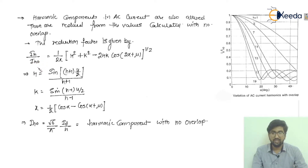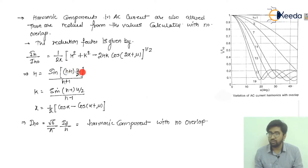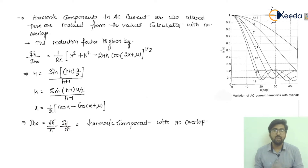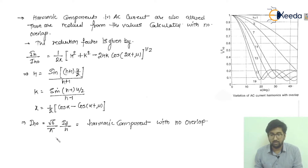When there is no overlapping, ih0 is written accordingly. The variable h is defined as sin((h+1)μ/2) / (h+1), and similarly k is sin((h−1)μ/2) / (h−1), while X = [cosα − cos(α+μ)] / 2. The value ih0 = (√6/π) · Id/h, where h is the harmonic order. For example, if the harmonic order is 6, you substitute h = 6 into the expression.